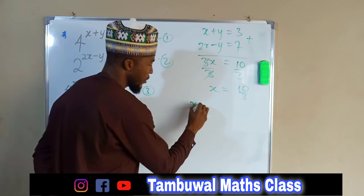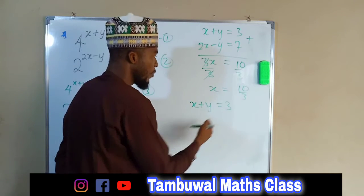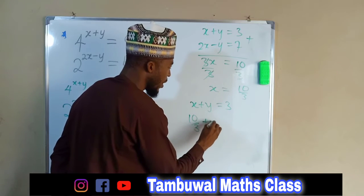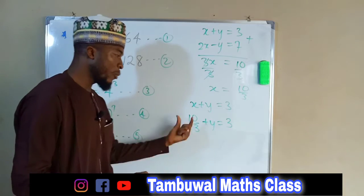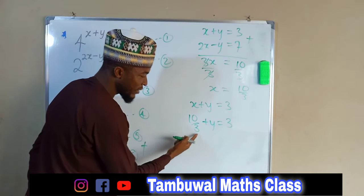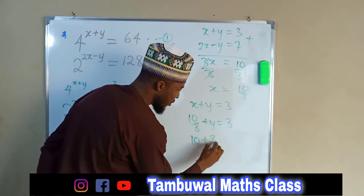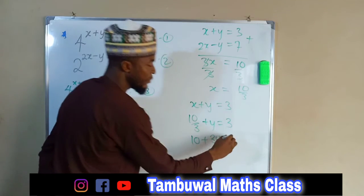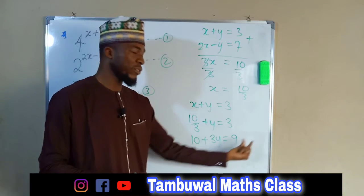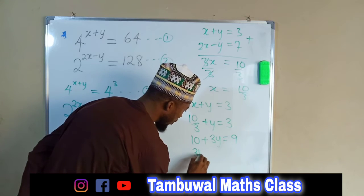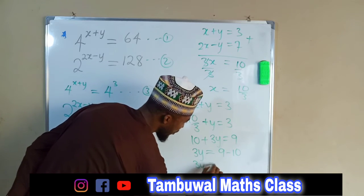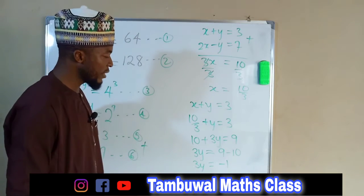So we have gotten X to be equal to 10 over 3. Substituting into equation 5: 10 over 3 plus Y equals 3. By multiplying each term by 3 to get rid of the fraction, we get 10 plus 3Y equals 9. Our main target is Y, so we take the constant to the right hand side, leaving 3Y equal to 9 minus 10, which is negative 1.